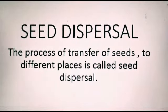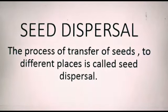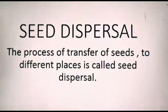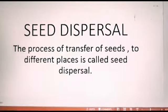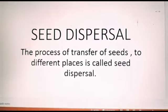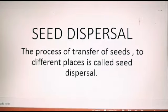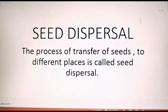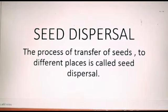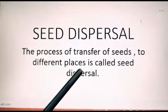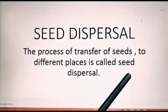A large number of plants will then start growing at one place. They will not get enough space, water, minerals or sunlight and will not be able to grow well. Many of them would die. Nature has therefore arranged some method by which seeds of a plant are scattered over large distances. The process of transfer of seeds to different places is called seed dispersion.